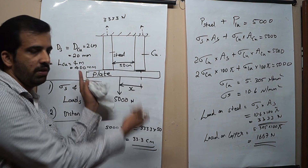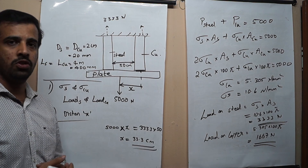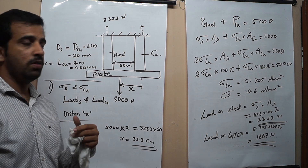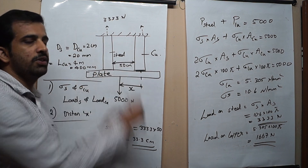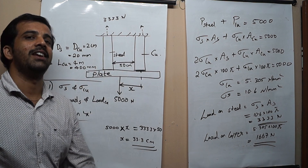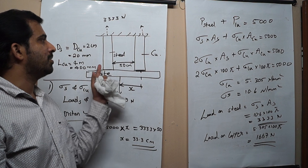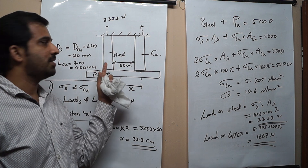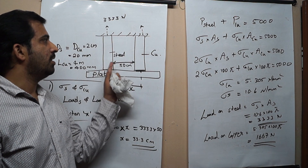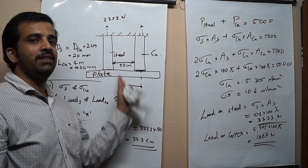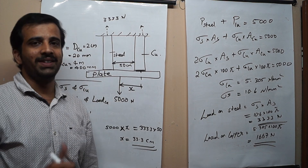This is how we solve a problem for composite structures when bars are of the same length. In the next video, we will see what happens to the stress and load acting on bars when bars of different lengths are chosen. Thank you.